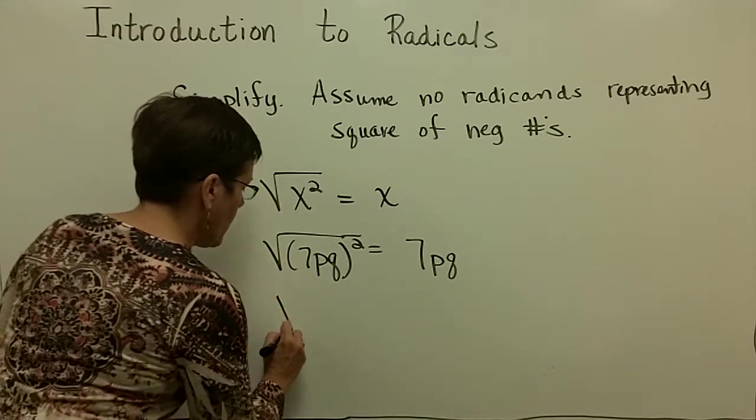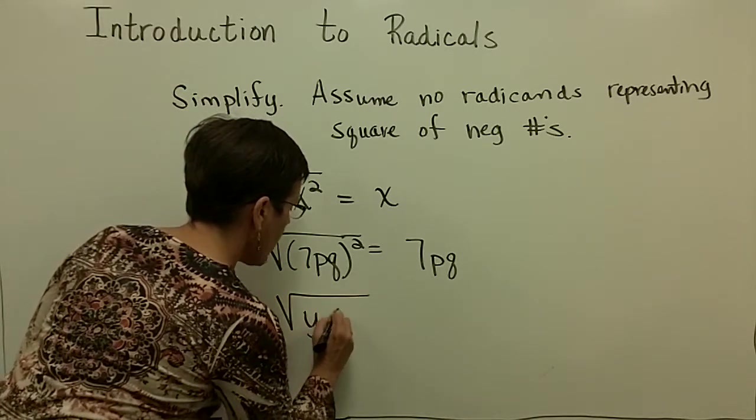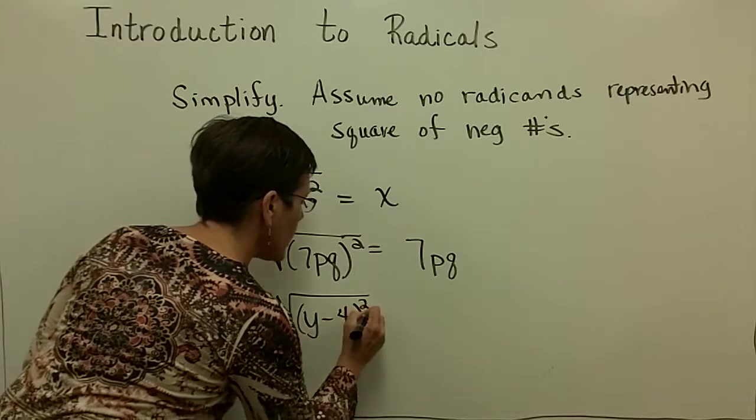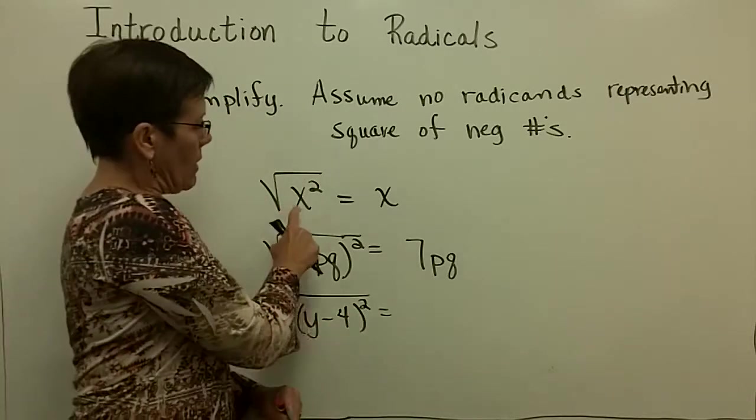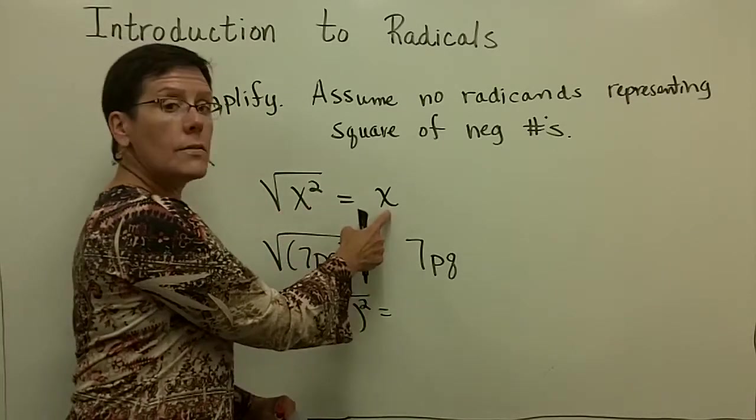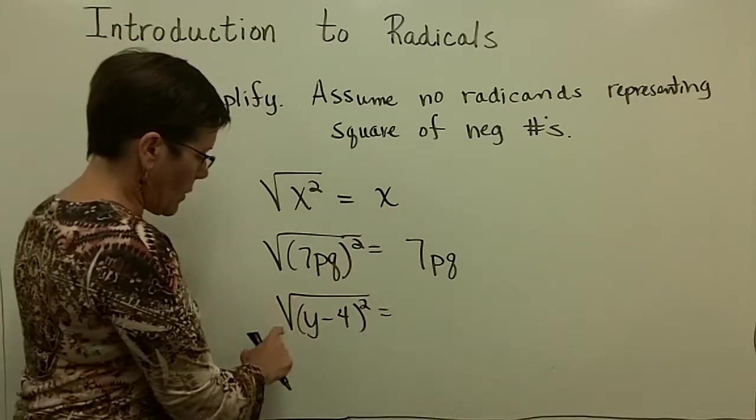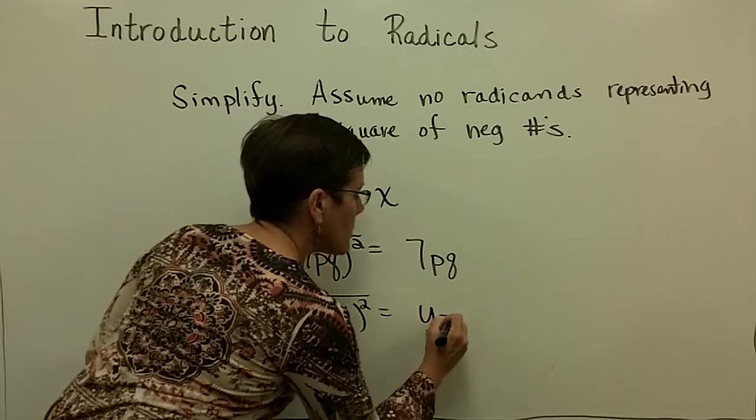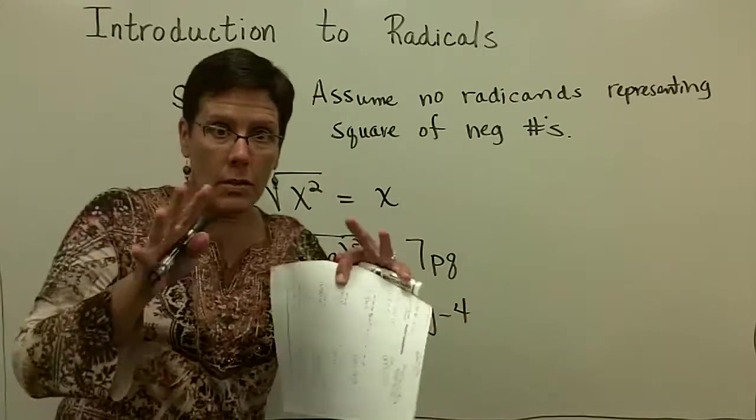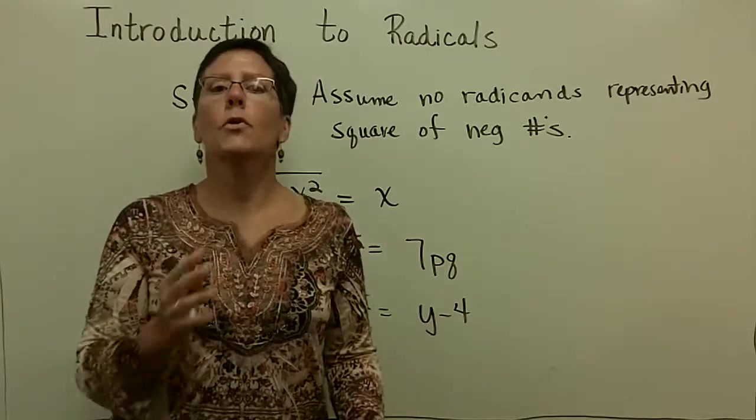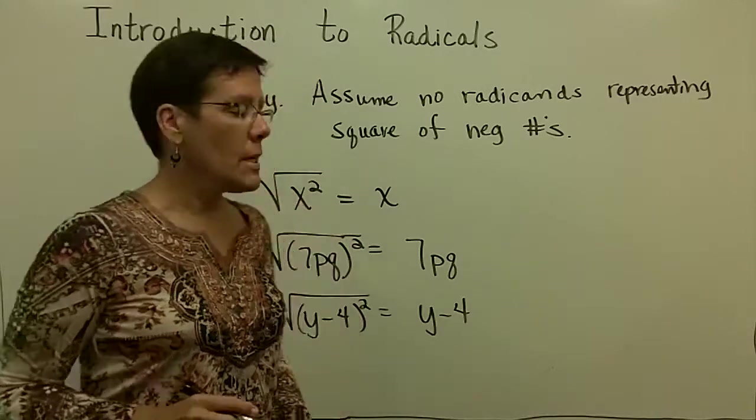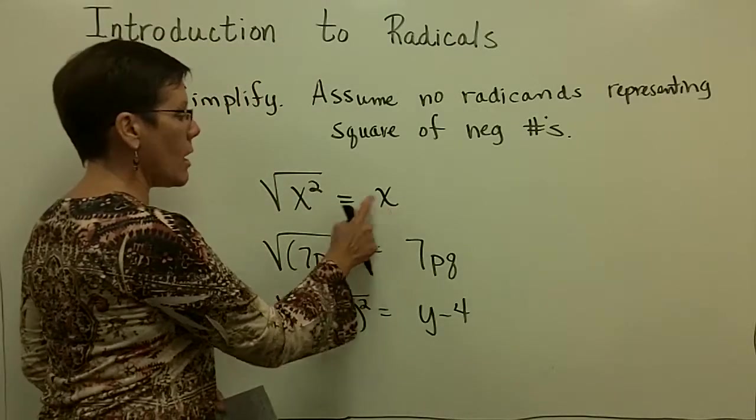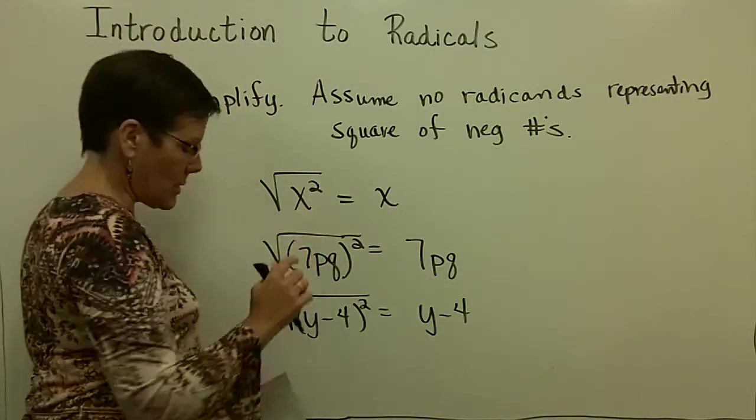Let's go ahead and look at the square root of y minus 4, that quantity squared. So I hope you're seeing that the square root of something squared is the something. So the square root of something squared is just that something, because y minus 4 times y minus 4 is y minus 4 squared. Again, you're looking for what times itself gives you the radicand, or what's under the radical.